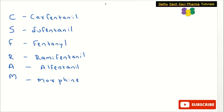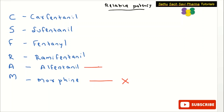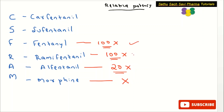Let us analyze the relative potency of each. Let us assume Morphine has a potency of 1x. Compared to Morphine, Alfentanil is 20 times more potent — so it would be 20x. Remifentanil is 100 times more potent than Morphine, so it is 100x. Fentanyl is also 100 times more potent than Morphine, so Remifentanil and Fentanyl are both 100x.